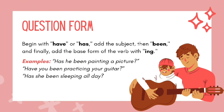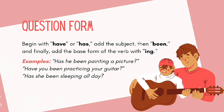Question form: Begin with have or has, add the subject, then been, and finally add the base form of the verb with -ing. Examples: Has he been painting a picture? Have you been practicing your guitar? Has he been sleeping all day?